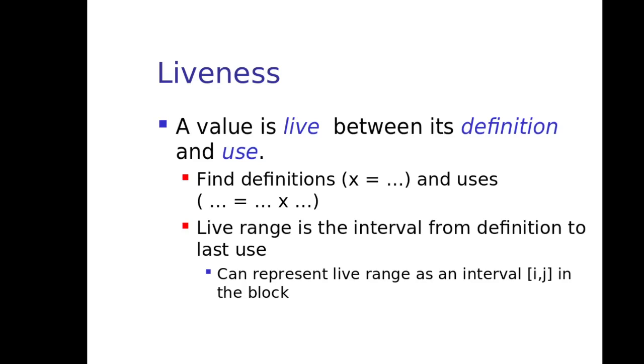What is liveness? A value is live between its definition and use. So till it is being used, it is live. A live range is the interval from the definition to the last use. This interval can be represented like this.